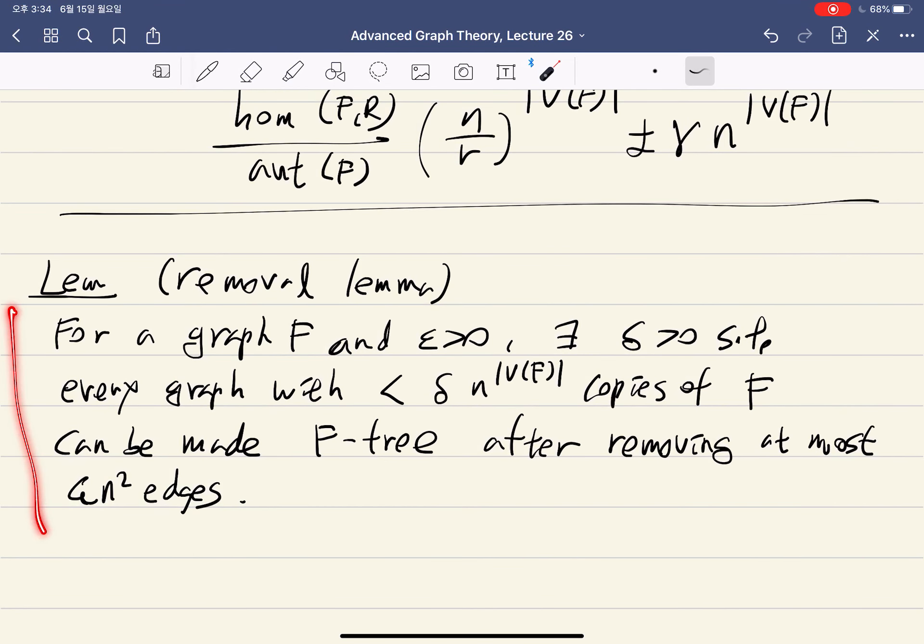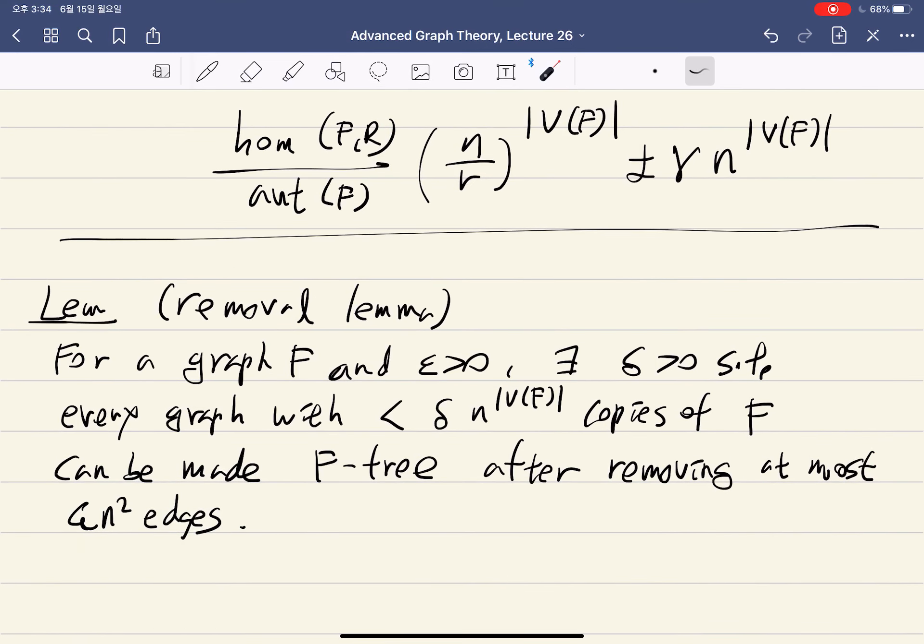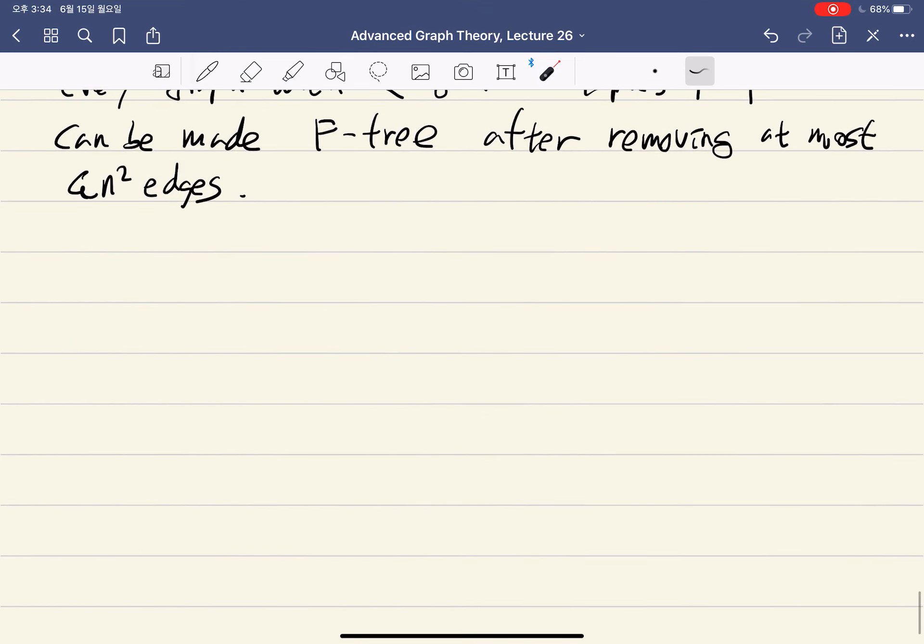For removal lemma, you do a similar approach: apply the regularity lemma and show that essentially there is no homomorphism from F to R when R is the reduced graph with the specific appropriate choice of epsilon and delta. Then you can prove the removal lemma as before.